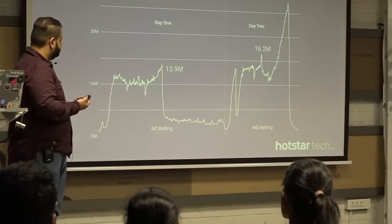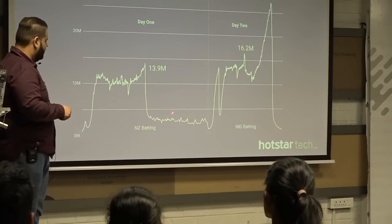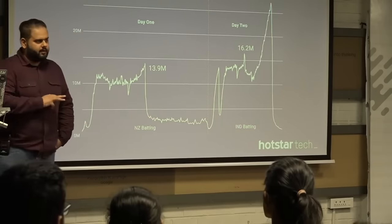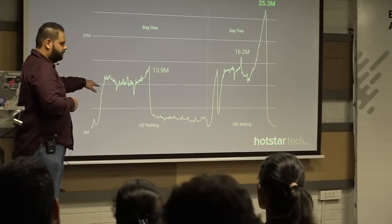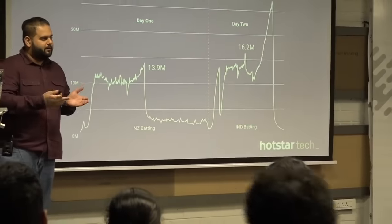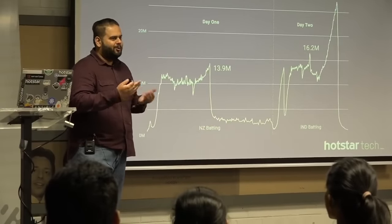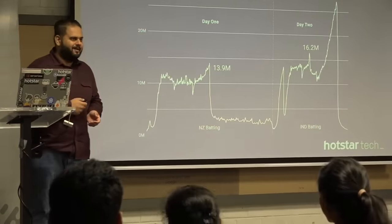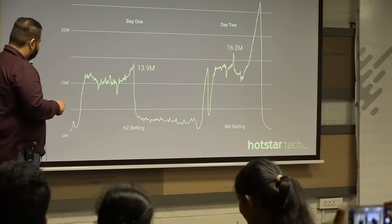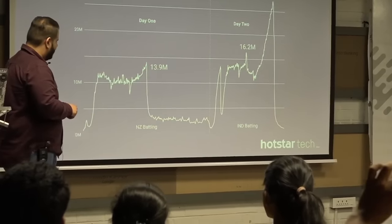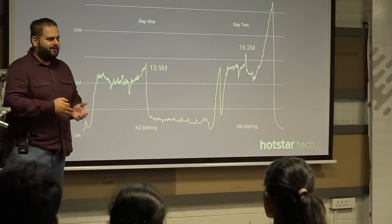Then unfortunately it started raining and there was a sudden dip. This is the most interesting part of that day — one of the events we have never seen before. When the rain started, there was a dip from 13.9 to 5 million. There was nothing on the screen — it was just raining, showing some highlights, no cricket being played. Still, 5 million people were glued to their screens waiting for the rain to stop, and this happened not for two or five minutes, but for three to four hours.